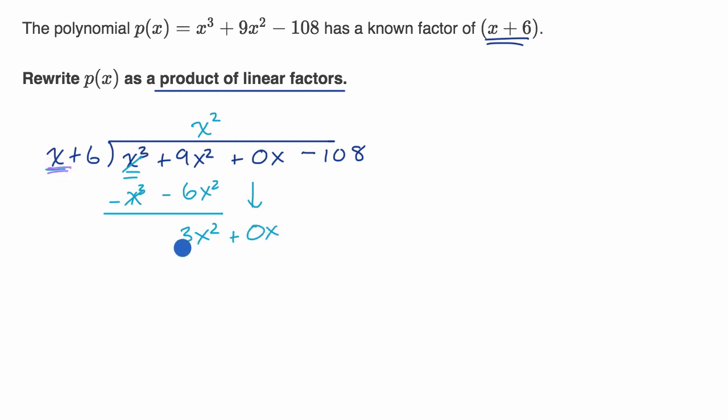And then how many times does x go into 3x²? Well, it goes 3x times, and we would write it in this column. And notice, if we didn't keep this column for our first degree terms, we'd be kind of confused where to write that 3x right about now. And so 3x times 6 is 18x.